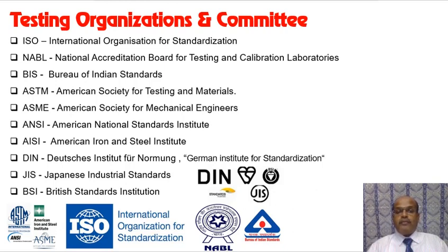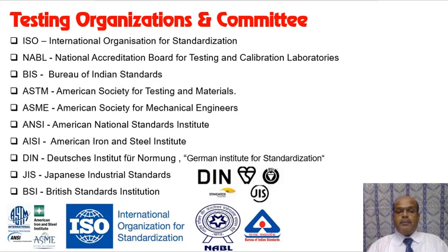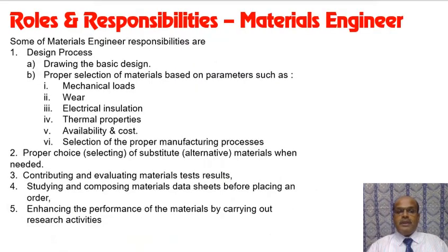Other organizations include BIS (Bureau of Indian Standards), ASME (American Society for Mechanical Engineers), ANSI (American National Standards Institute), AISI (American Iron and Steel Institute), DIN (German Institute for Standardization), JIS (Japanese Industrial Standards), and BSI (British Standards Institution).